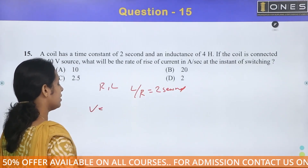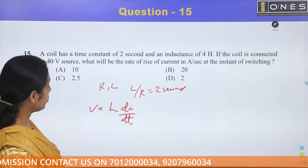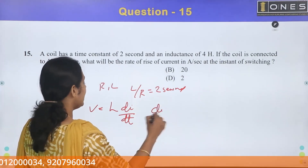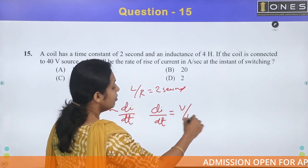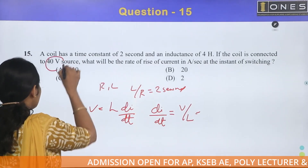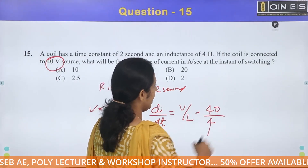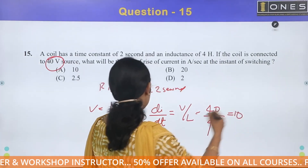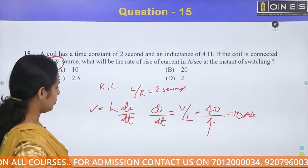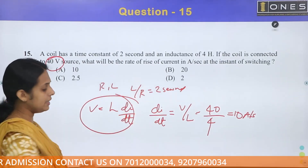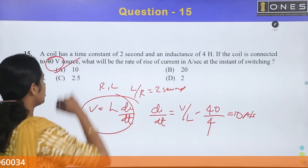The voltage across the inductor is V = L × dI/dt. To find the initial rate of rise of current, dI/dt = V divided by L = 40 divided by 4 = 10 ampere per second. That is the rate of change of current at the instant of switching.